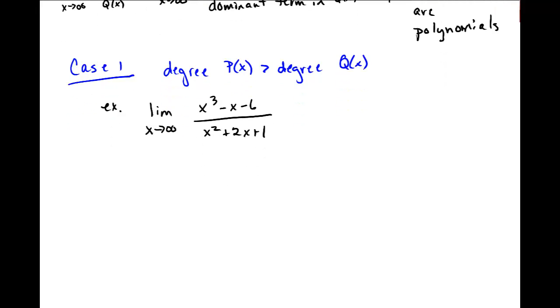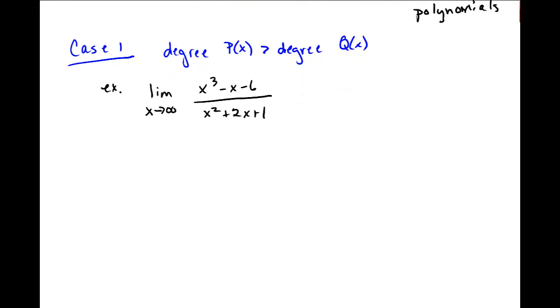Now we have this dominant term rule, so this is the limit as x approaches infinity of x cubed over x squared. When I divide, I get the limit as x approaches infinity of just x, and that is going to go out to infinity, right? That's one of the basic rules that we have for limits at infinity.